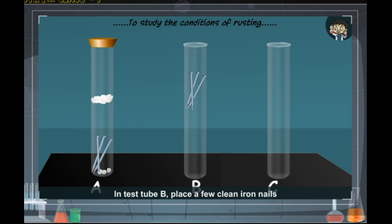Test tube B: In test tube B, place a few clean iron nails and pour boiled water into it. The boiled water does not contain any dissolved gas. Put a layer of oil over the boiled water.